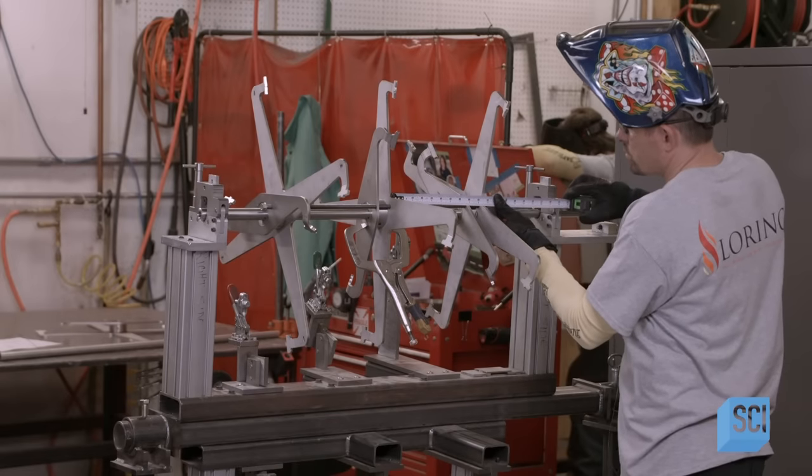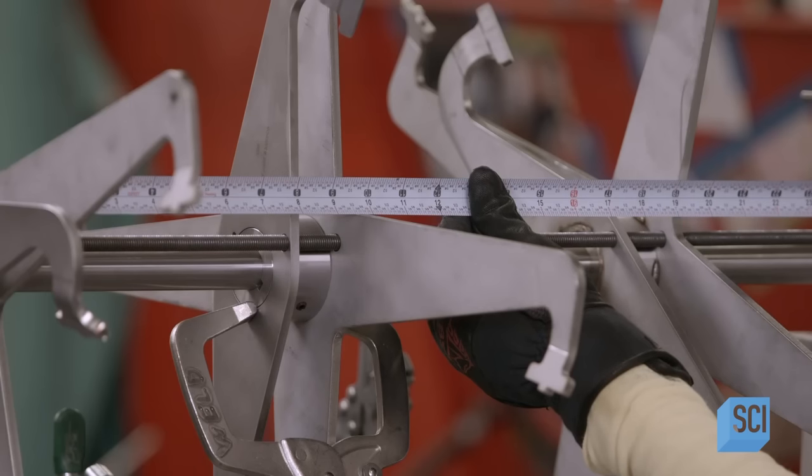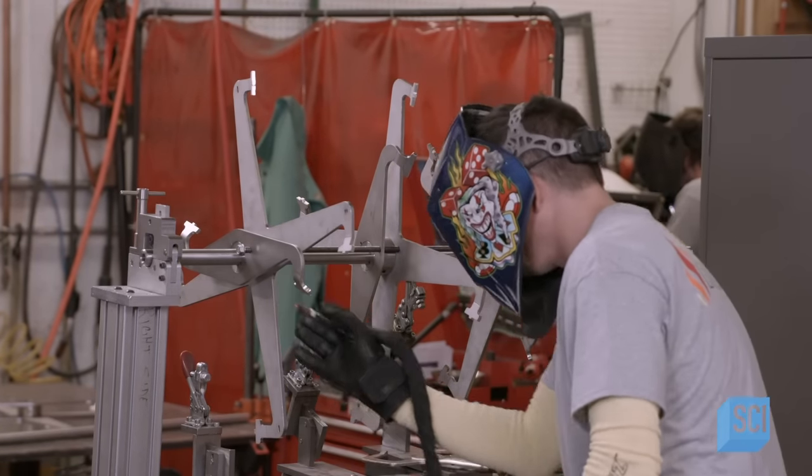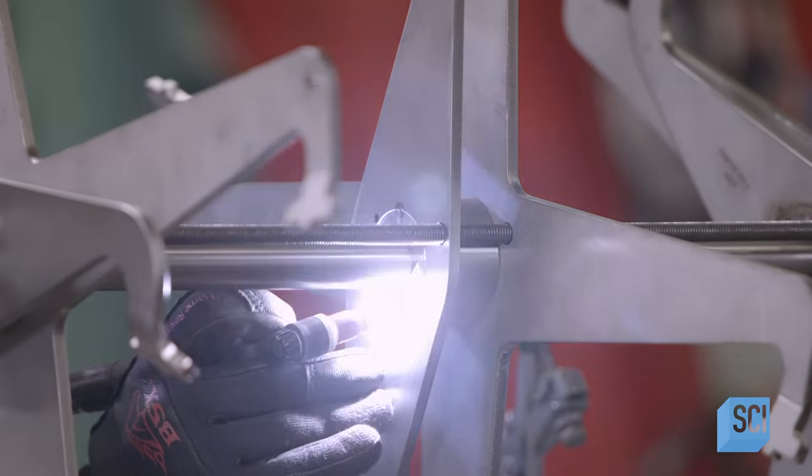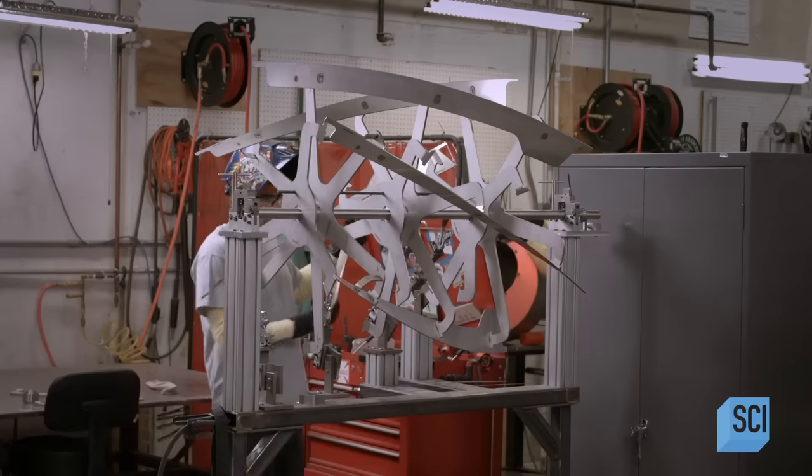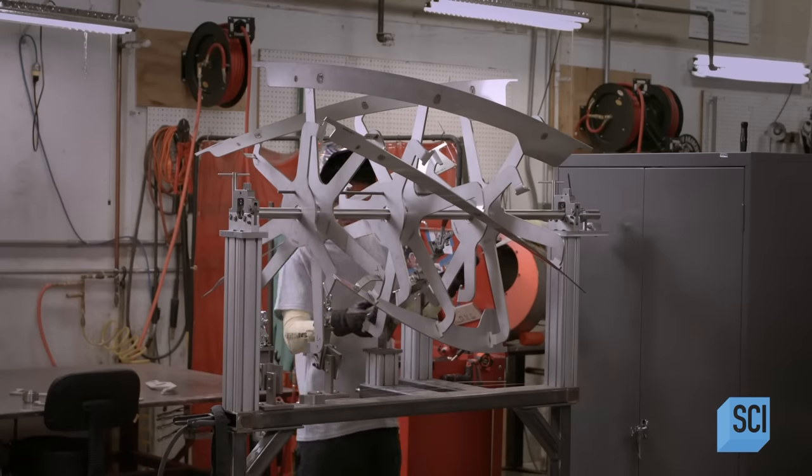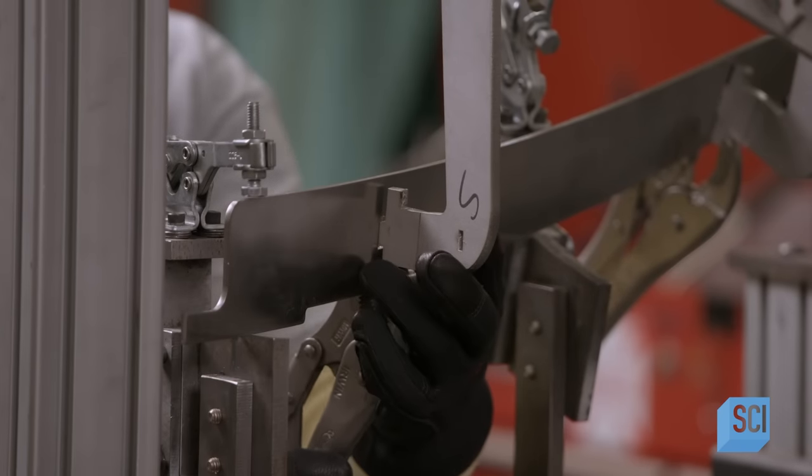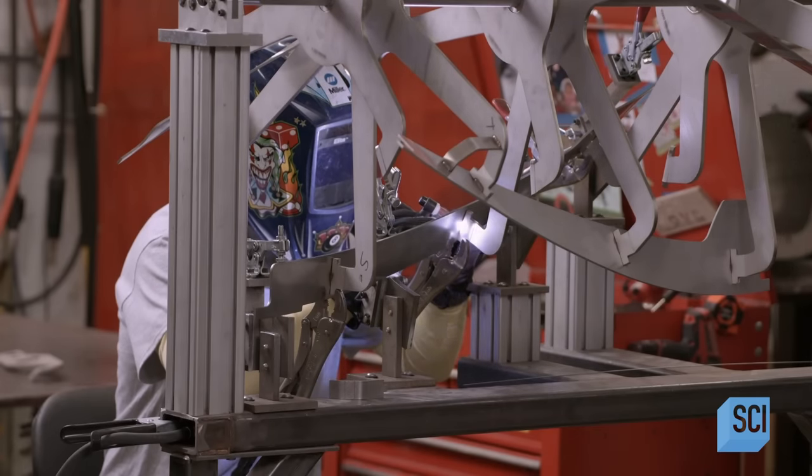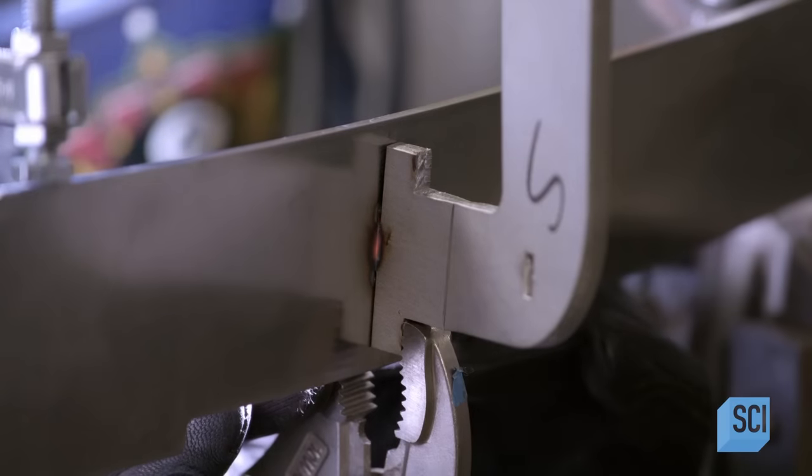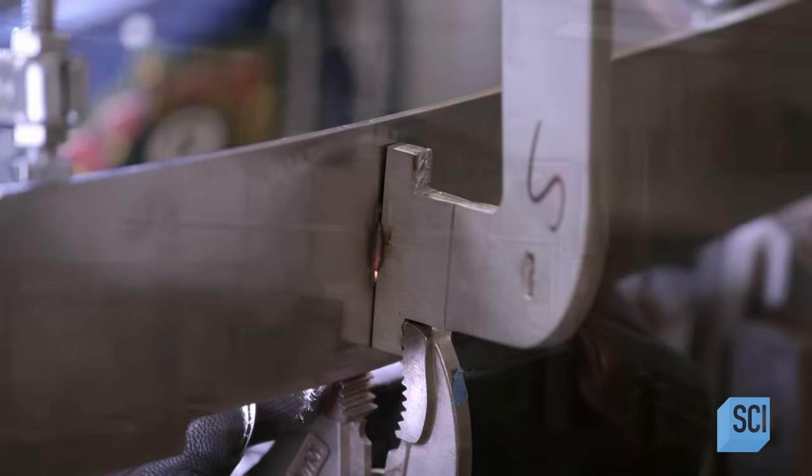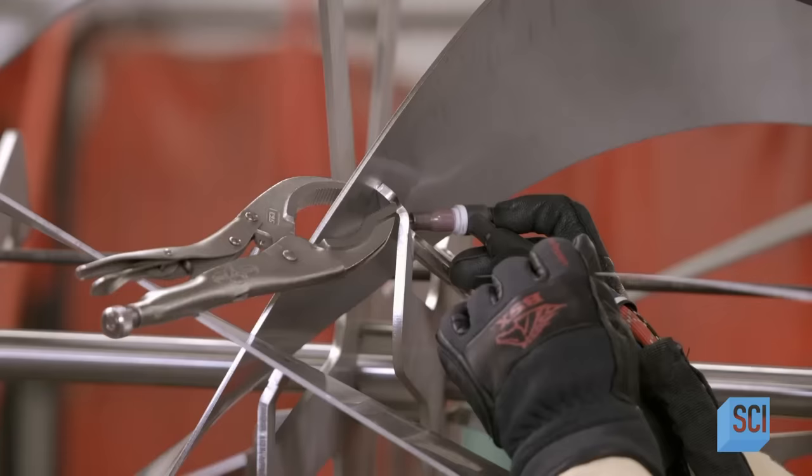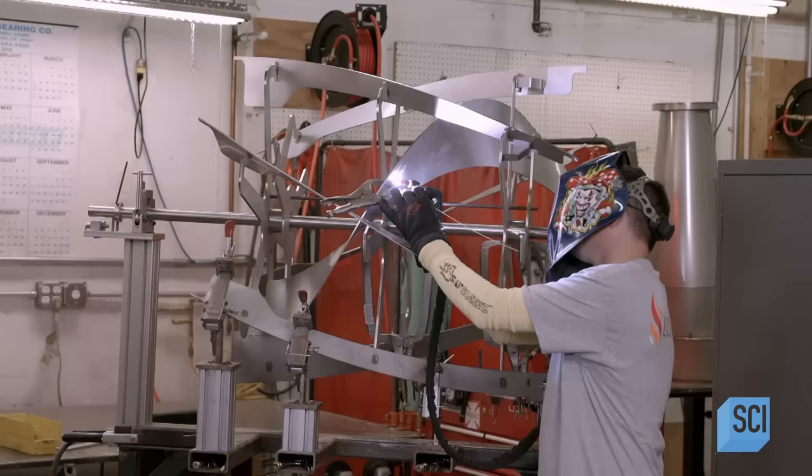Next, the welder places all the paddle components into a specialized fixture, which positions them correctly. First, he aligns the spokes to the paddle shaft. Then, he welds the parts in place. He positions the flights, clamps them securely, and welds them on. The combination of inner and outer flights lifts the beans into the airflow, ensuring the beans roast evenly.